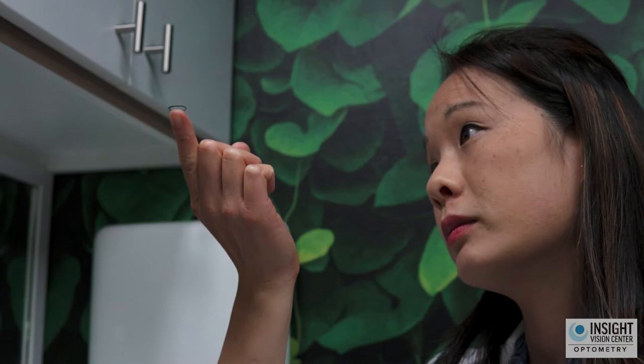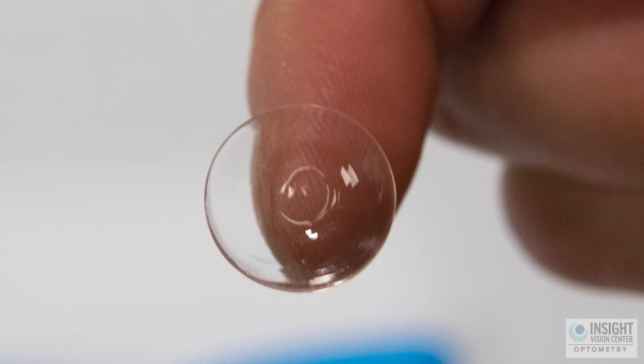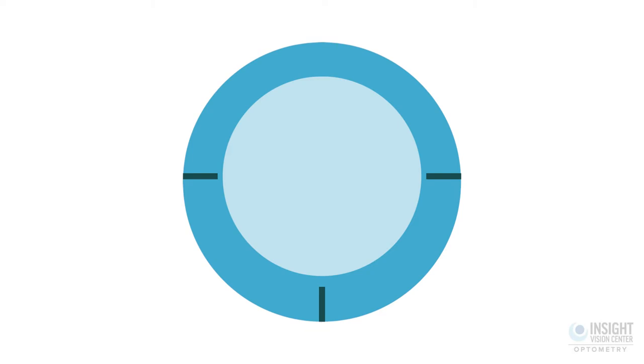Also inspect the contact lens to make sure it doesn't have any tears or rips. Step 6: If you have contact lenses with astigmatism, you may notice a faint laser marking etched onto the contact. This is not a defect and will help the lens orient in the right position.